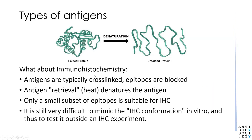Immunohistochemistry is a special case where antigens are typically cross-linked, and so many epitopes are blocked. In order to make anything visible, one needs to use a procedure called antigen retrieval, which is essentially heat denaturation of the antigen. So the antigen almost certainly looks very much like the denatured structure. Still, only a small subset of epitopes is suitable for immunohistochemistry because antigen retrieval is never complete. It is rather difficult to mimic this exact IHC conformation in vitro, so the bad news is that specificity in IHC probably has to be tested in IHC.